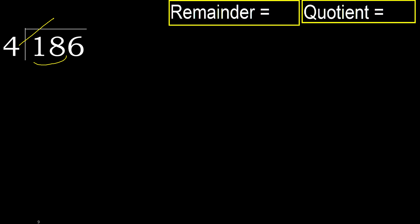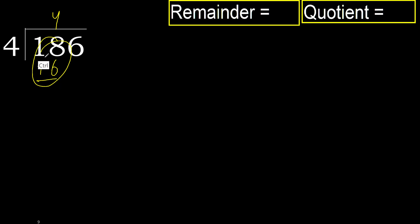4 multiplied by 5 is 20 — 20 is greater. 4 multiplied by 4 is 16 — 16 is not greater, ok. Subtract, next.